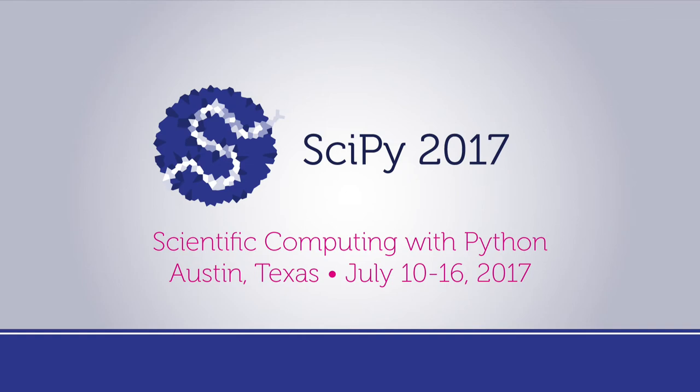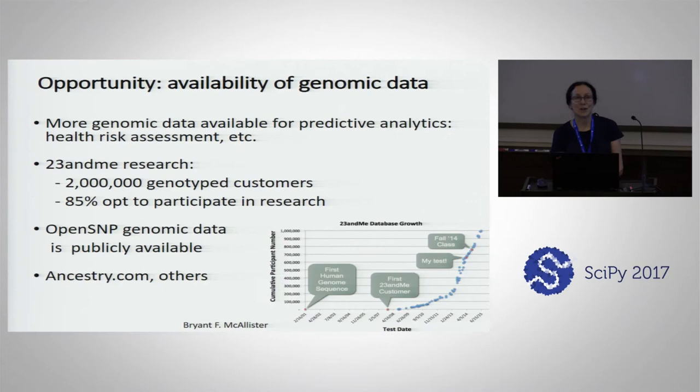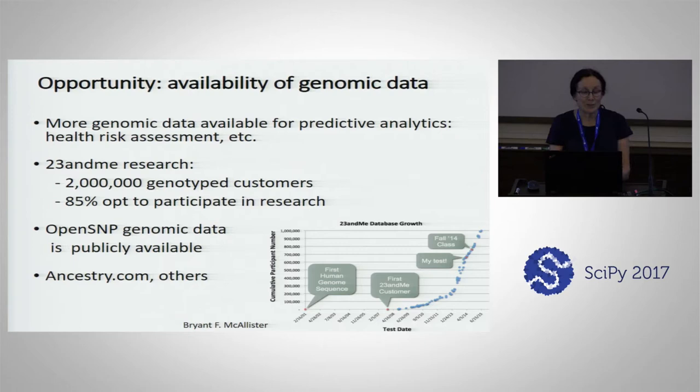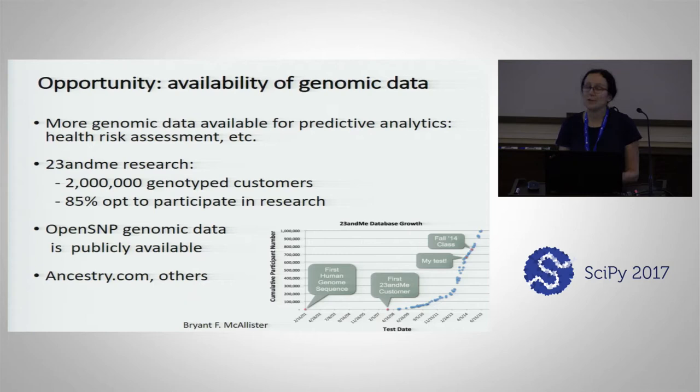We're at an exciting time. Have you noticed that a lot of people are getting their genome sequenced? So there's a lot of genomic data available out there that did not used to be there. 23andMe alone now has two million genotype customers, and when you turn in your spit to 23andMe, they offer you to participate in research, and 85 percent of people who turn in their genome for sequencing accept that offer. So there's information out there that can be mined.